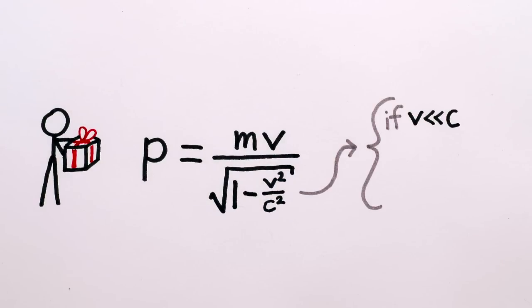if your velocity is small compared to the speed of light, because then v over c is really small, and 1 minus something small is basically just 1.